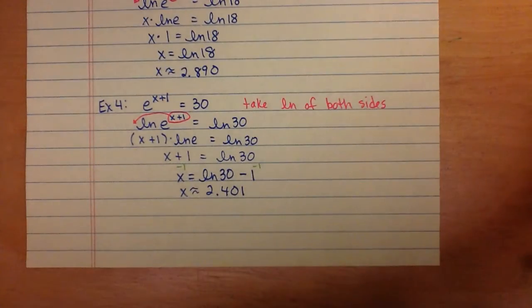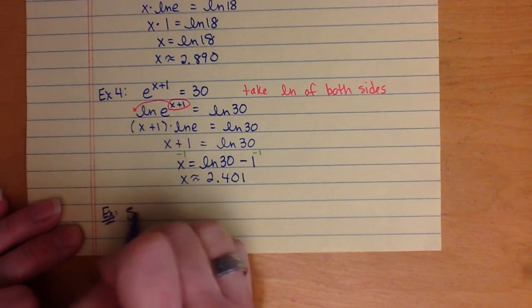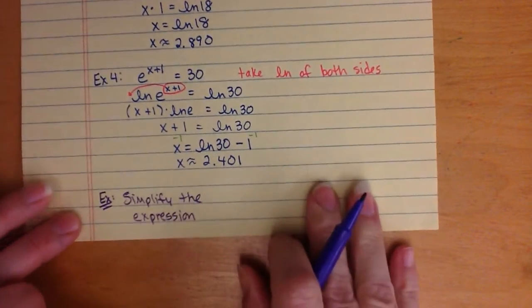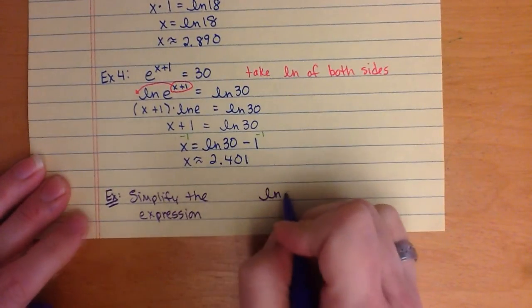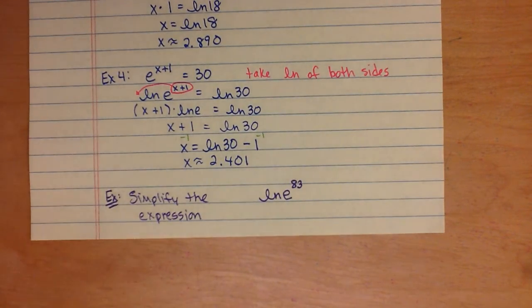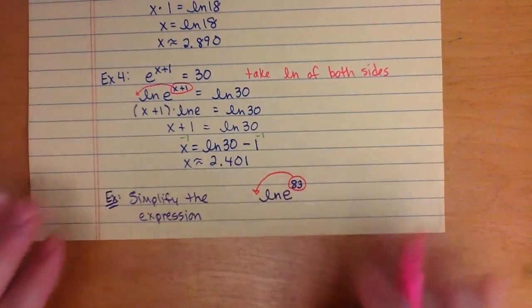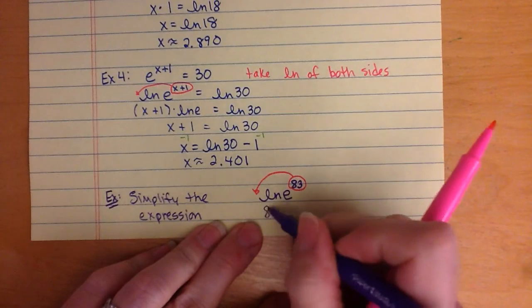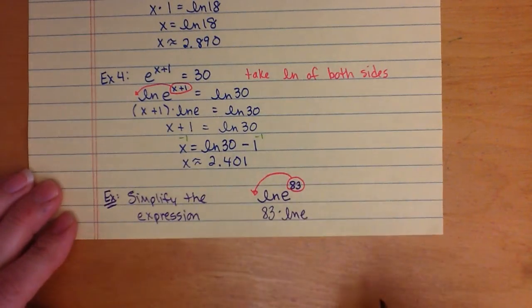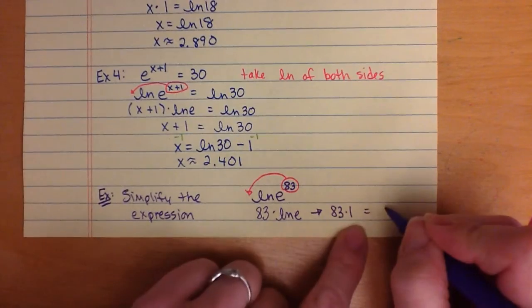We have one more example — simplify the expression: natural log of e to the 83rd. We can bring that exponent out to the front, giving 83 times the natural log of e. Since the natural log of e equals 1, that's 83 times 1, which gives a final answer of 83.